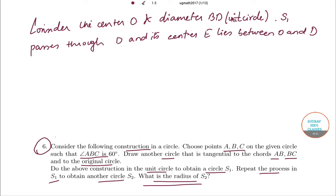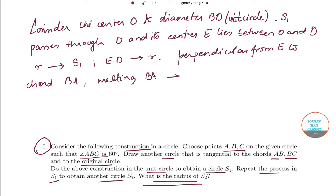So I am giving you a rough idea, or complete idea, of what you need to do. Just follow the steps and make the drawing. Now let r be the radius of S1. Given this, the length of ED is r. Now consider the perpendicular from E to chord BA meeting BA at the point F.